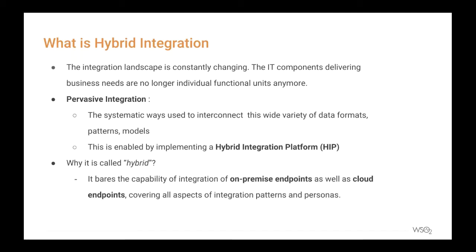If you take a particular business today, it has partners, customers, suppliers, and mobile users. IT components delivering services to each of these parties need to be integrated together to deliver more functionality and be competitive with other enterprises. The challenge is that when you try to integrate these individual business components, they deal with different data formats and different protocols. Integrating these together is called pervasive integration, and you need to do it securely. In short, a system or platform or collection of integration technologies to securely interconnect IT components delivering business functions is called a hybrid integration platform.